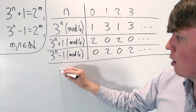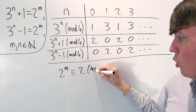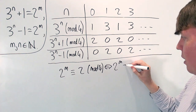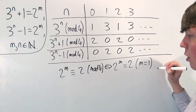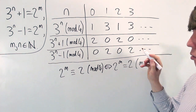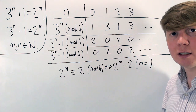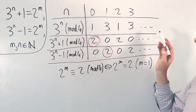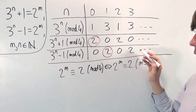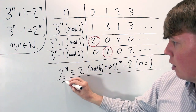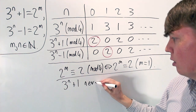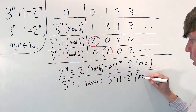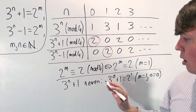If 2 to the m is equivalent to 2 modulo 4, this holds if and only if 2 to the m is actually equal to 2, so m has to equal 1. This is useful because all the cases where we get remainder 2 only work if 3 to the n plus 1 or 3 to the n minus 1 is actually equal to 2. So for 3 to the n plus 1 we can rule out all remaining even powers of n, and for the other equation we can rule out all remaining odd powers of n. For 3 to the n plus 1 where n is even, the only possible solution is 3 to the 0 plus 1 equals 2 to the 1, giving m equals 1 and n equals 0.